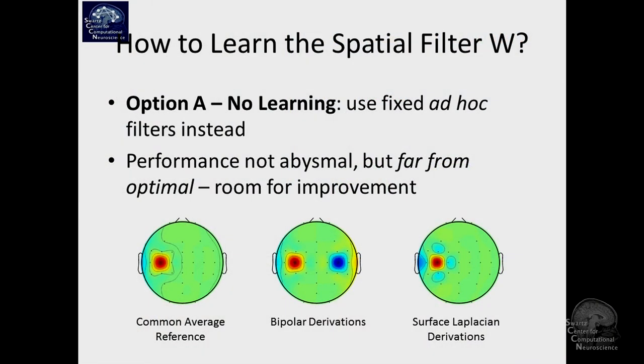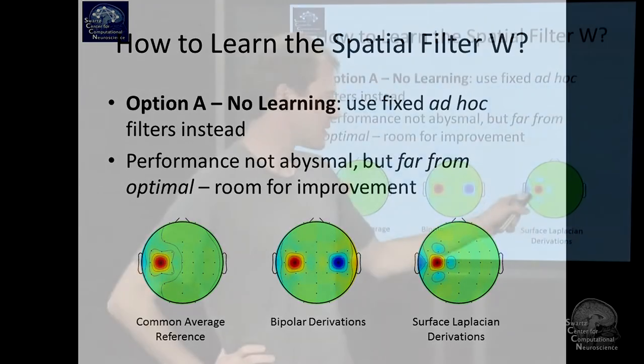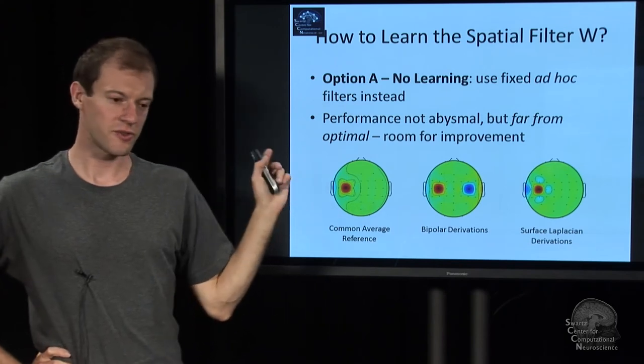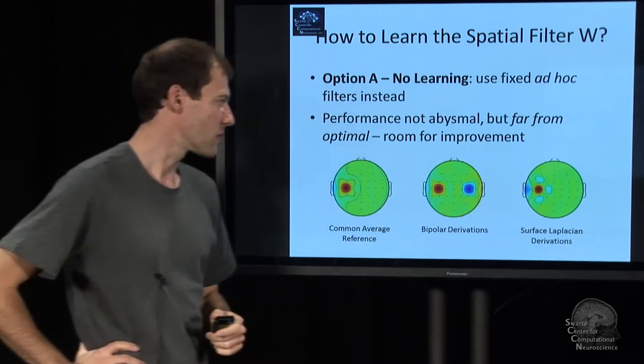It doesn't address what the cortex is folded of the person underneath. There's various other methods. You can use bipolar derivations. People have done this in the 80s, for example. Take this channel minus that channel. And there is a surface Laplacian, which produced the colorful plots at the beginning of this lecture.